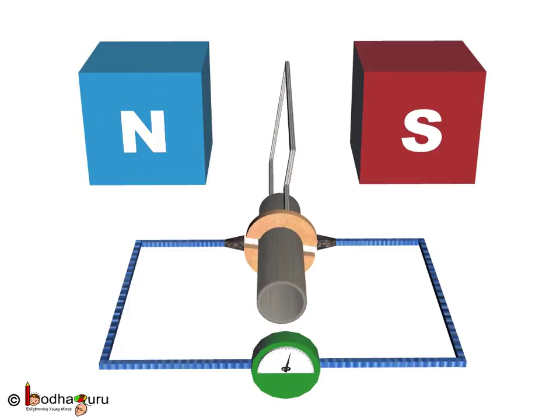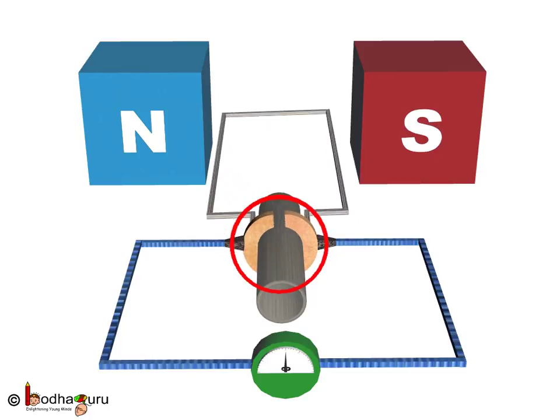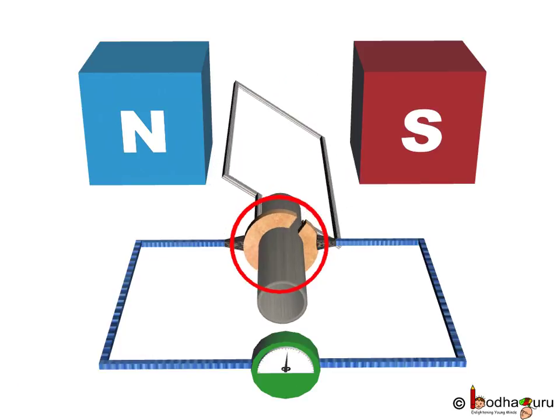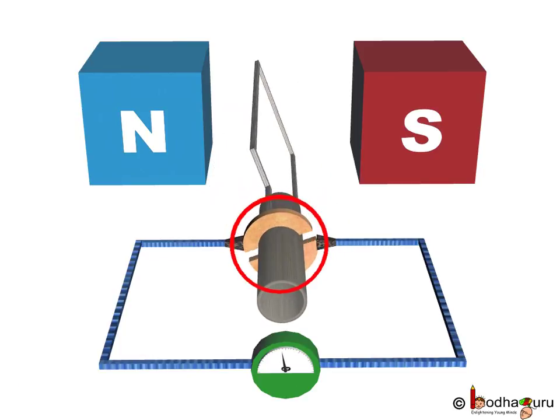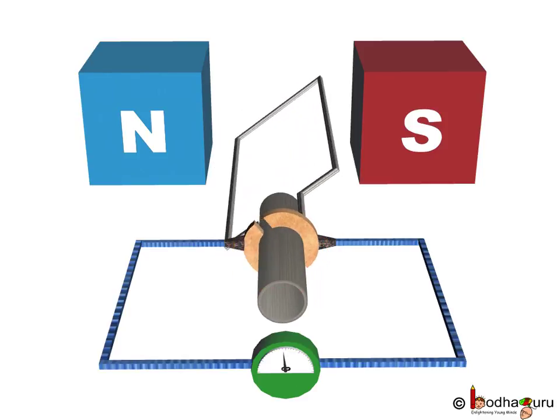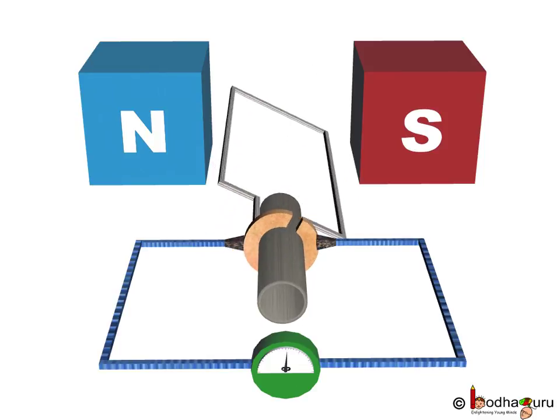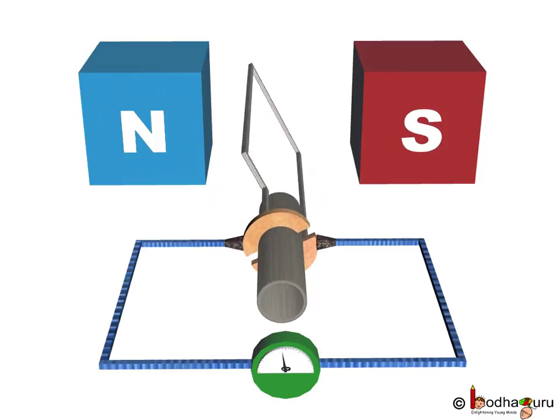And this is because one brush is at all times in contact with the arm moving up in the magnetic field, while the other is in contact with the arm moving down. Thus, a unidirectional current is produced and the generator is thus called a DC generator.